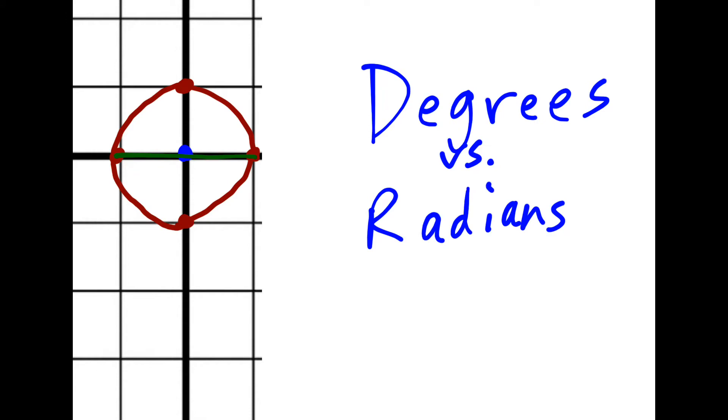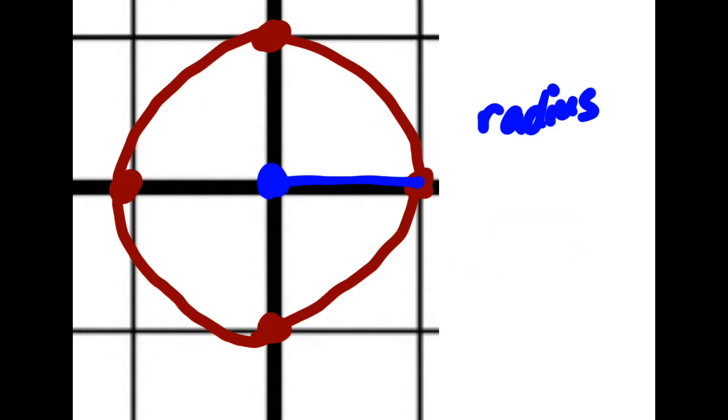However, when we are doing trigonometry, we tend to use radians as well, which is a different type of unit than degrees. Here's where it comes from. So this blue line is the radius of a circle, but how many of these blue lines could I fit around a circle? Well, it turns out if I wanted to get halfway, I could do one, two, three of them, and then a little bit extra.